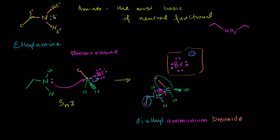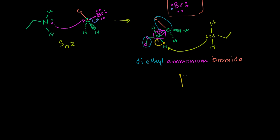Now we can go one step further. If we have a ton of ethylamine floating around in excess - early on we'll have much more of it - it might be able to grab one of the hydrogens from the diethylammonium. You could imagine a situation where it grabs a hydrogen, essentially gives its electron to the hydrogen, and then that hydrogen's electron can be taken back by the nitrogen. I'll draw this as an equilibrium because it's a reversible reaction.